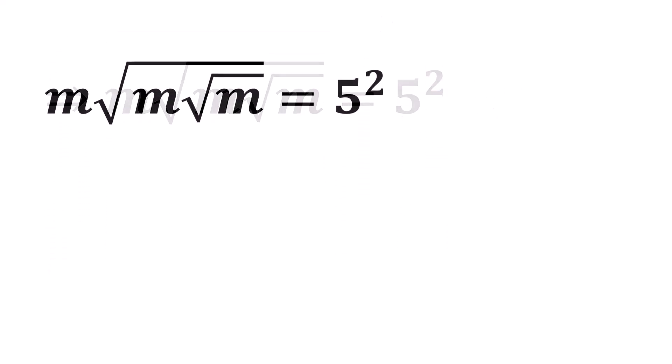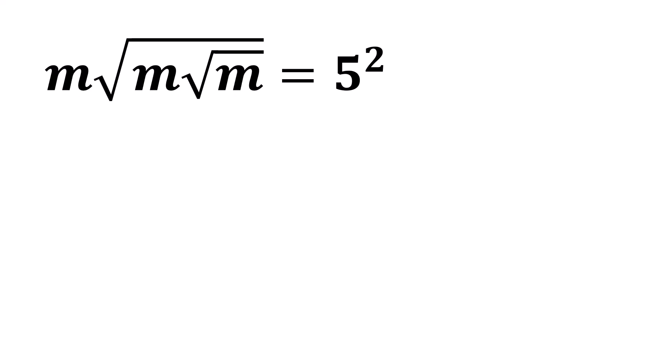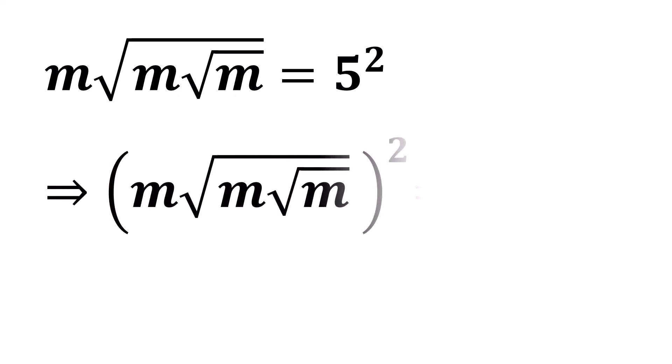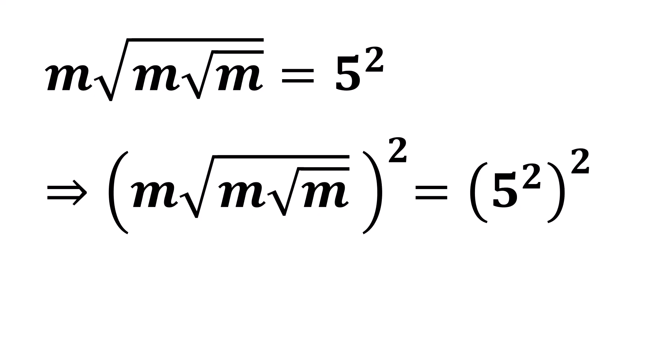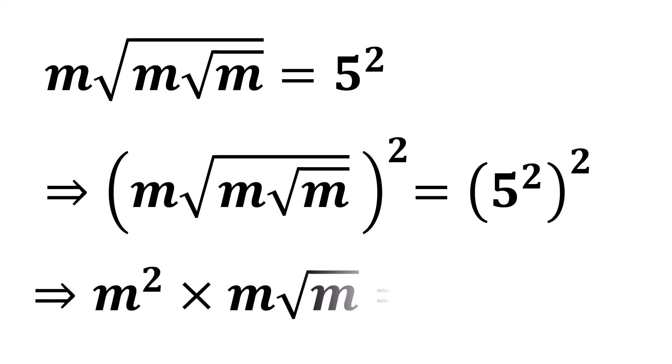By squaring both sides again, we get the square of m times the square root of m times the square root of m, which equals 5 squared all squared. Simplifying this, we get m squared times m times the square root of m, which equals 5 to the power of 4.